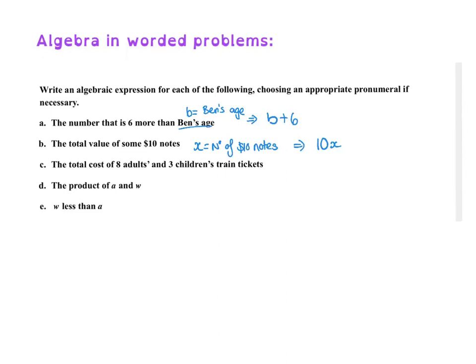Okay, so the total cost of 8 adults and 3 children train tickets. So I might say let A equal adult cost of ticket or whatever. And then I might say C equals child cost.